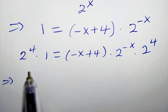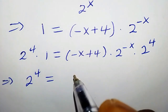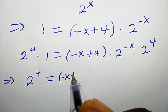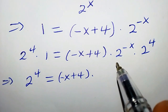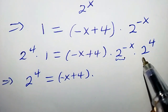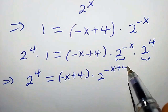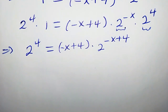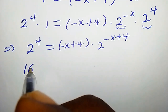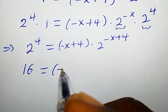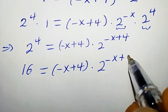This implies that 2 to the power of 4 equals negative x plus 4 times, by laws of indices — we have the same base — so this becomes 2 to the power of negative x plus 4. What is 2 to the power of 4? That is simply 16 equals negative x plus 4 times 2 to the power of negative x plus 4.